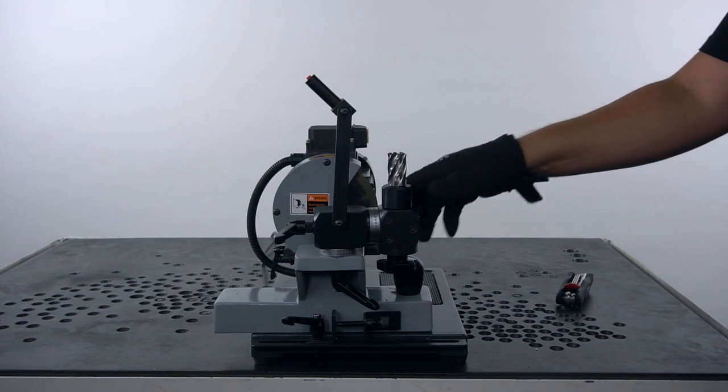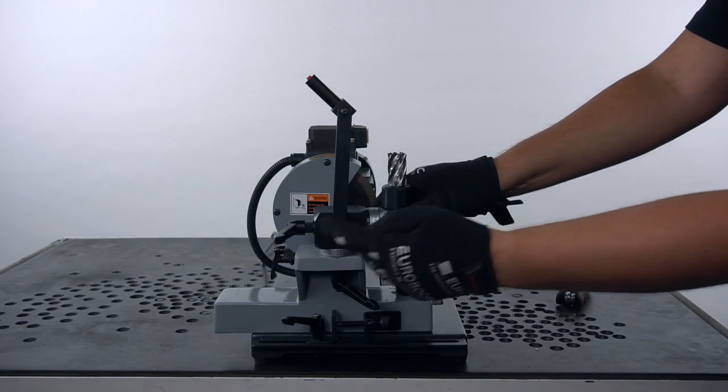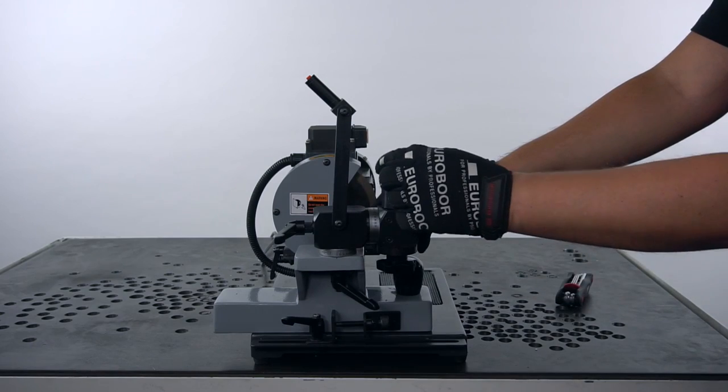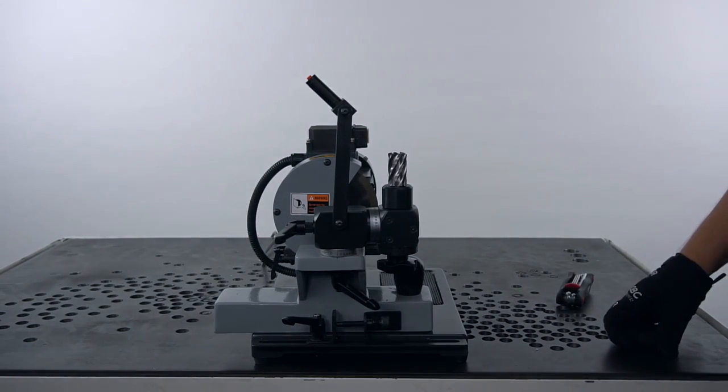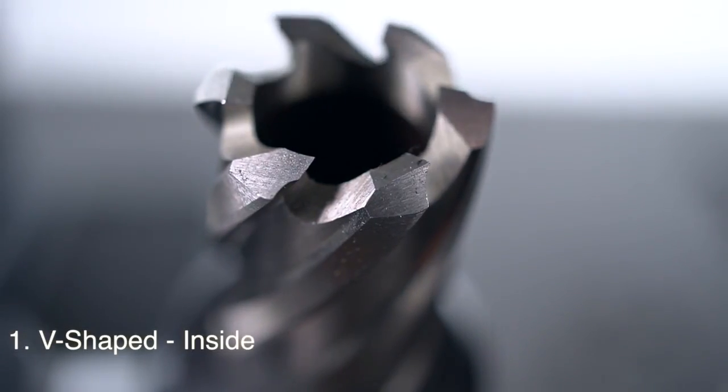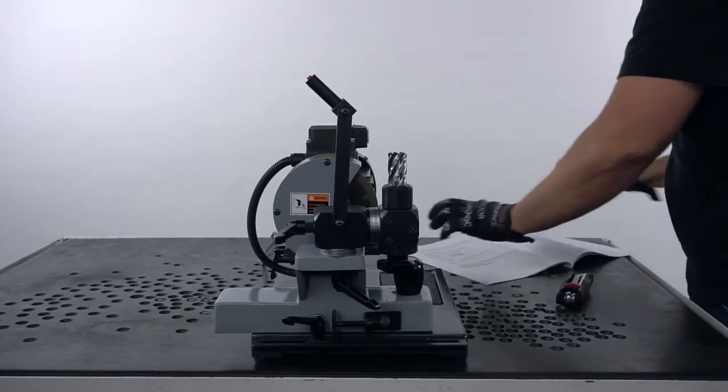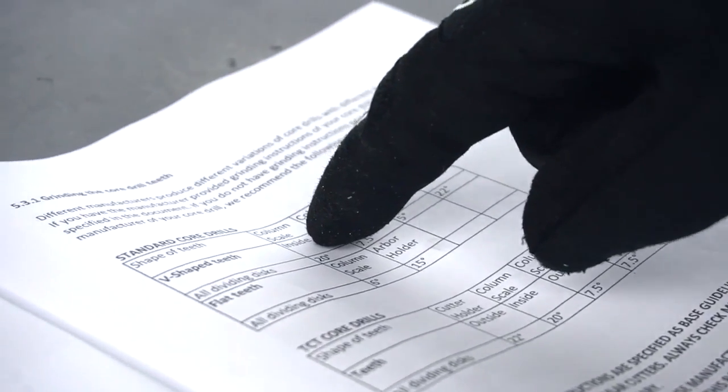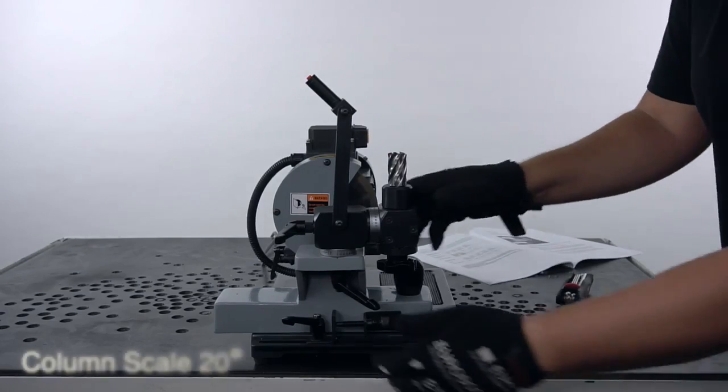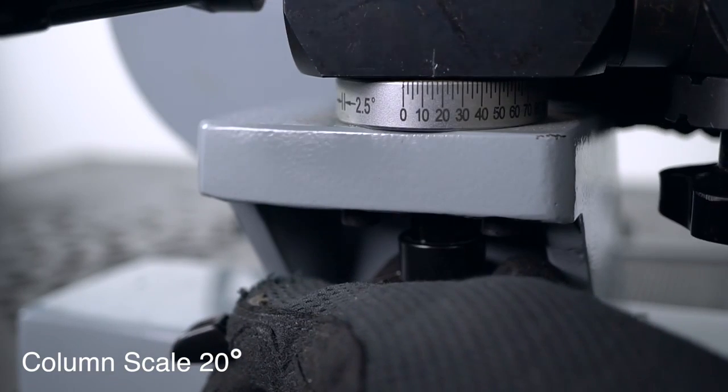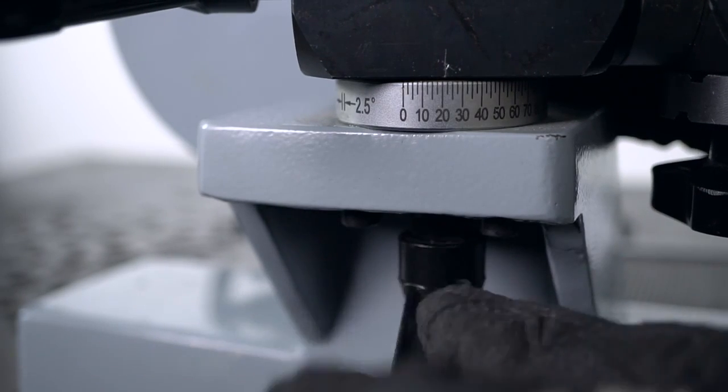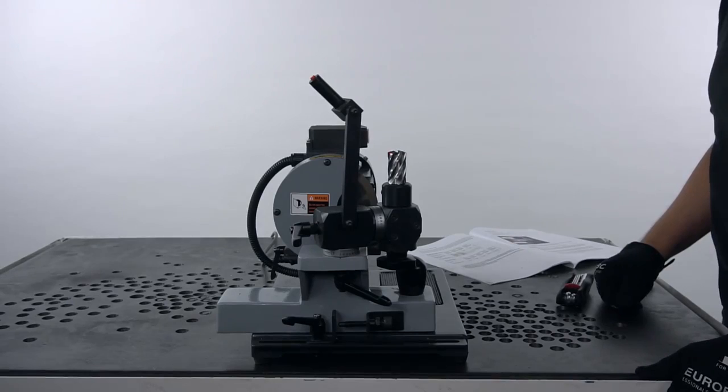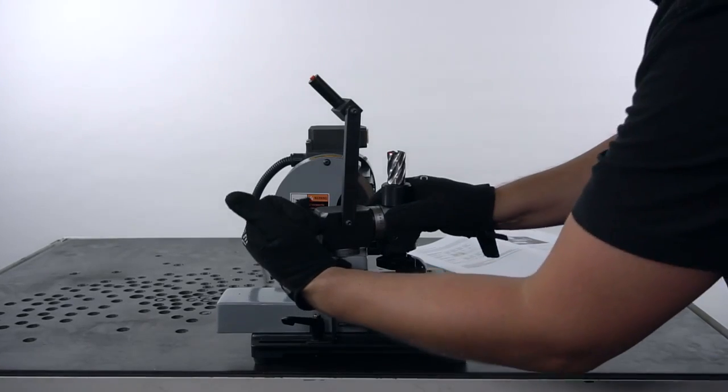Now we have to position the arbor holder and the column scale with the appropriate angles for each position. We're going to re-grind the first position, the inside V-shaped teeth. Refer to page 11 of the manual supplied with the machine. The column scale has to be set on 20 degrees and the cutter holder at 5 degrees position.